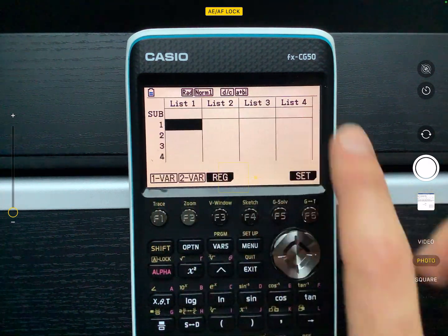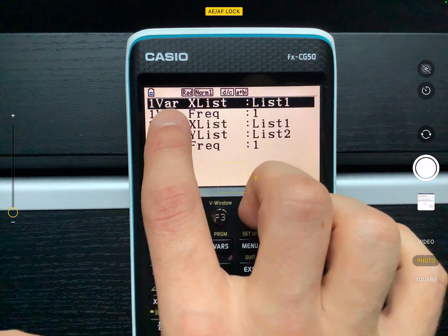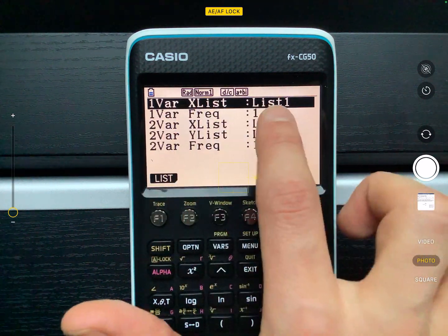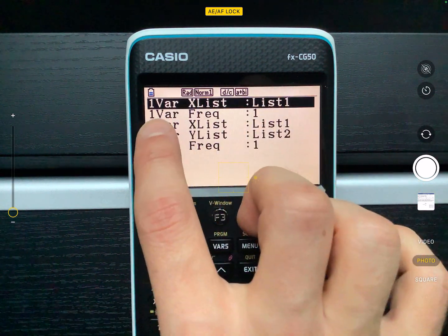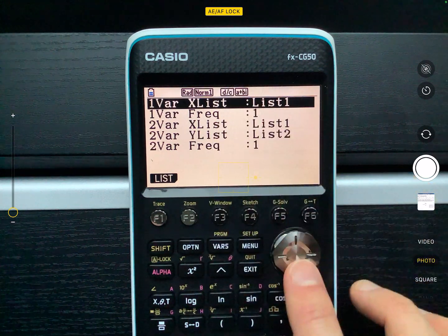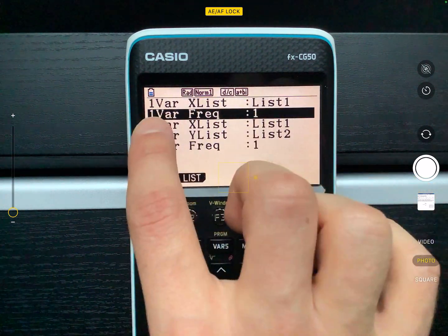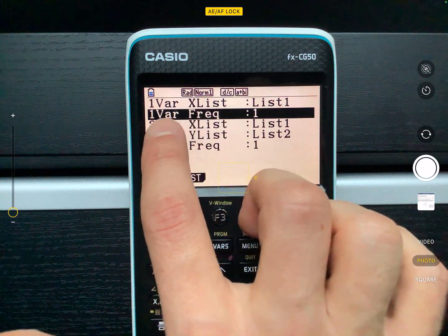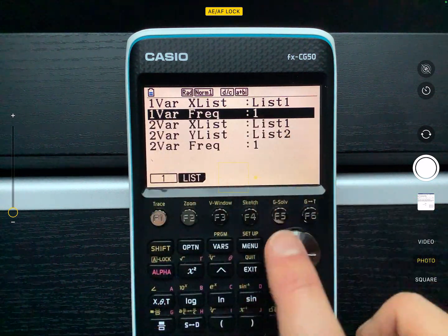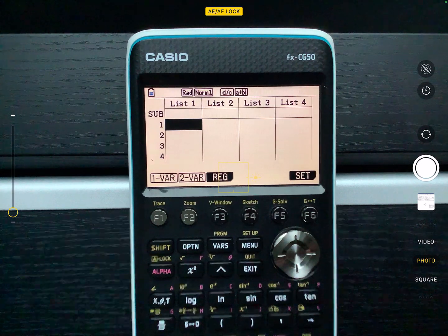When you press set, we've got these list titles along the top. So the one variable, the X values are going to go in list one and then one variable frequency. I'm going to change it so that the frequency for the variable is just going to be one.